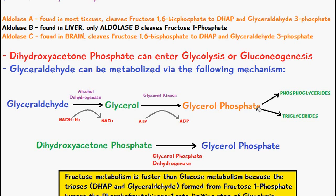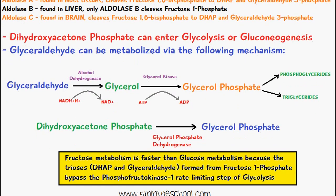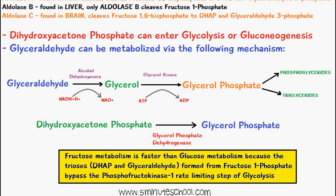Glycerol phosphate can then be used to synthesize phosphoglycerides and triglycerides. Dihydroxyacetone phosphate can also be converted into glycerol phosphate via glycerol phosphate dehydrogenase, and again this can be used to form phosphoglycerides or triglycerides.